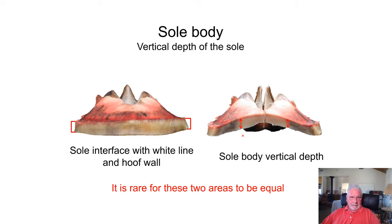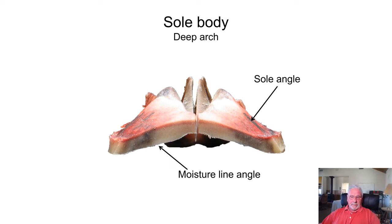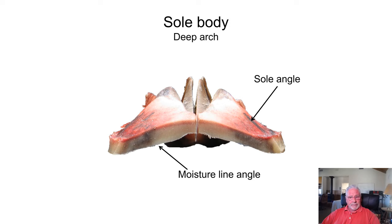Looking at the sole body with a deep arch — the angle of the sole represents the arch, as we said earlier. This side of the foot has a fairly steep arch. If the farrier cleans the foot out to the epidermal sole, it can have some variations in its vertical depth, so they're not getting a true representation of the arch. This is why it's important to work with a veterinarian. A veterinarian can use radiograph equipment to look at this area — the top line of the sole body — which is what you want to see when it comes to the arch of a horse's foot.